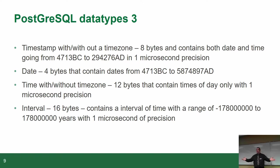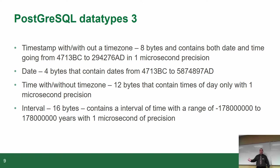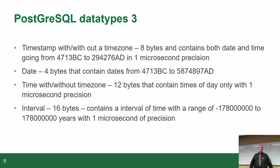If you have to do anything with dates and times, just use TIMESTAMPS because it gives you all the precision you'd ever need. Unless of course you're needing to go past 292,000 years in the future or before 47,000 years in the past. If you need to track data for 6,000 years prior, you're probably going to use some other kind of data type.